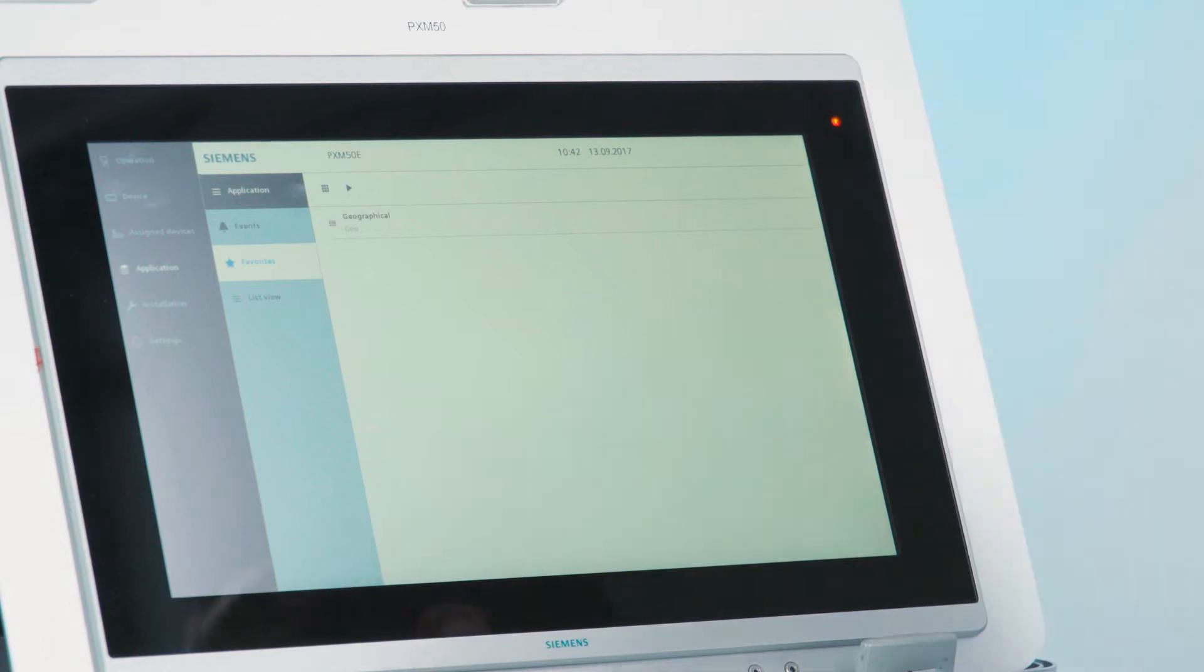If you have a SIGO Control Point touchpanel, such as this PXM50 here, you can perform the complete commissioning on the touchpanel itself. When you power up such a device for the first time you will be asked to perform an initial login and you have to change the default password to your own one. After that you can make all the device local settings.